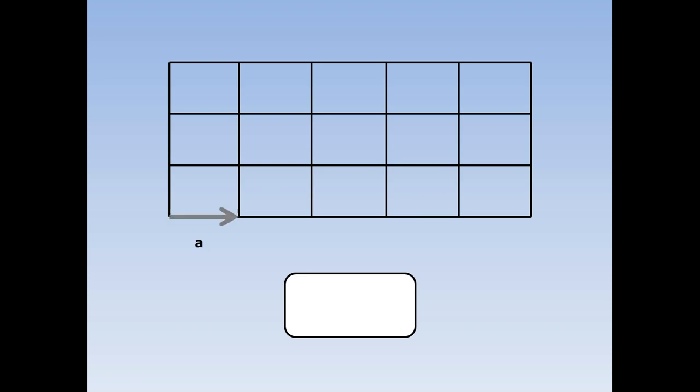Vectors 1. Here's a map of Vectortown. There are only two types of road in Vectortown: an A road and a B road. The residents use the A road and the B road to tell each other what their journeys are.